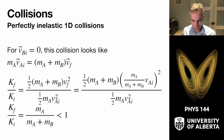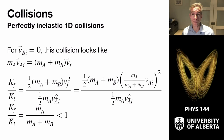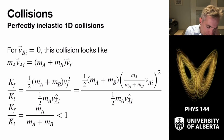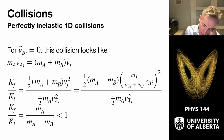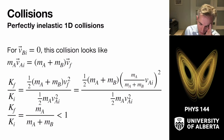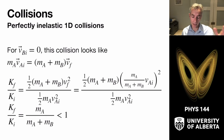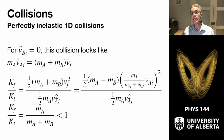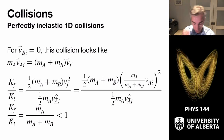Recapping with V_Bi = 0: the ratio of final to initial kinetic energy equals M_A / (M_A + M_B), which is necessarily less than one. So in perfectly inelastic one-dimensional collisions, kinetic energy is lost, and this ratio tells you exactly how much is retained.